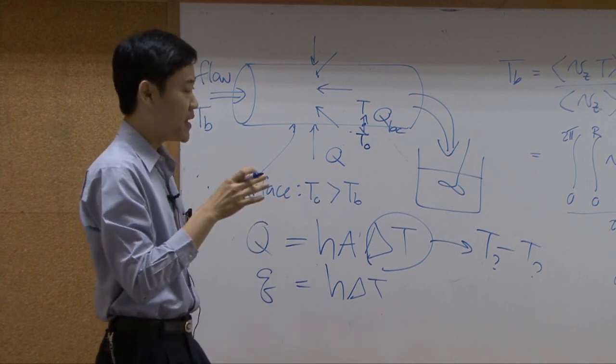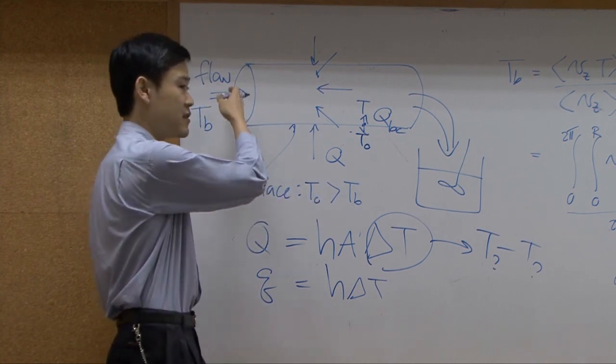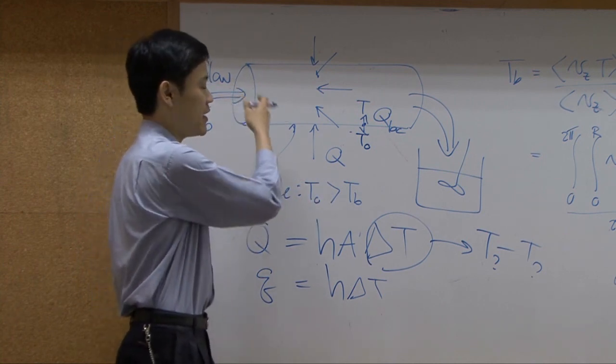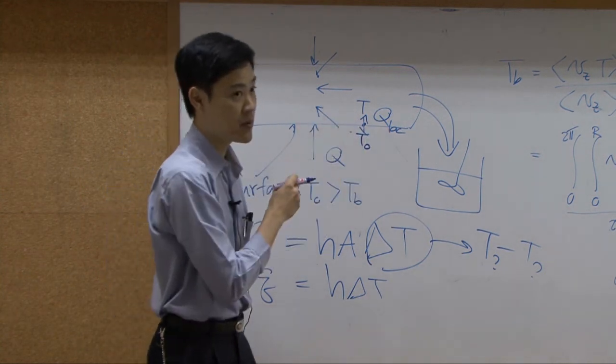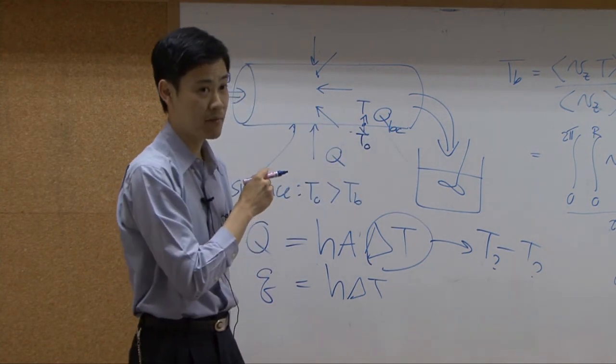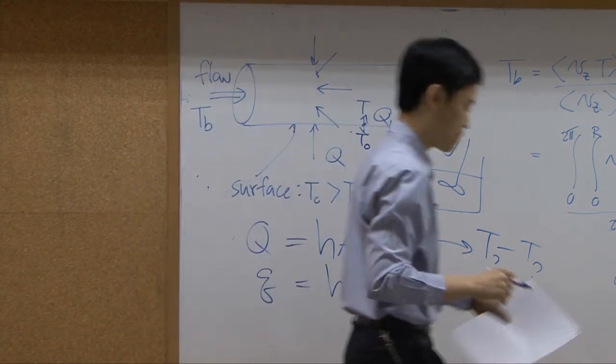The second problem is that the temperature inside the pipe is not something we normally measure. So we would like to change the calculation to be a function of the inlet temperature and outlet temperature instead.